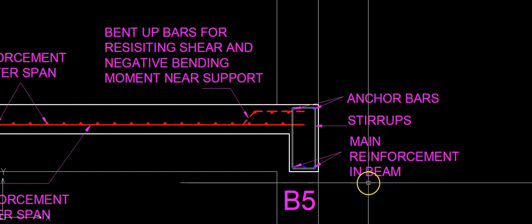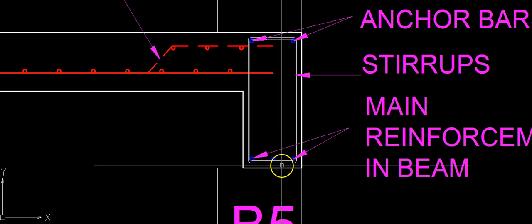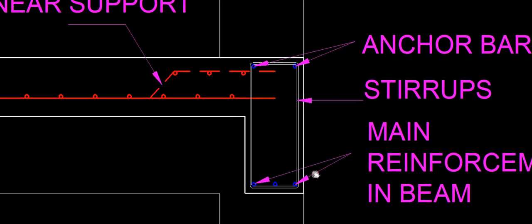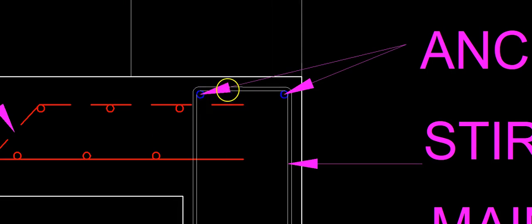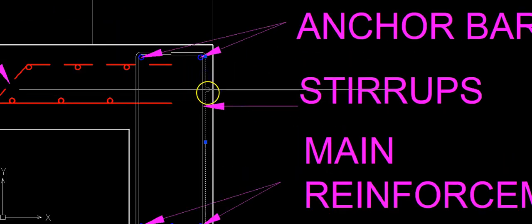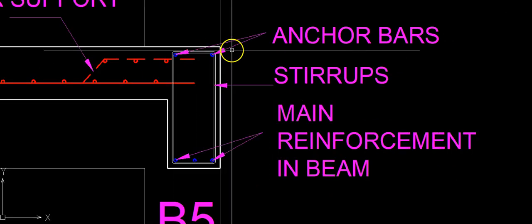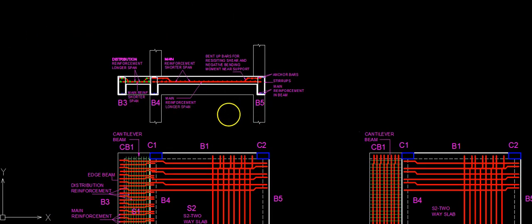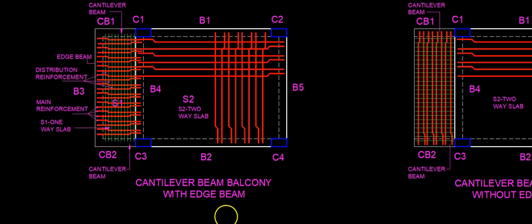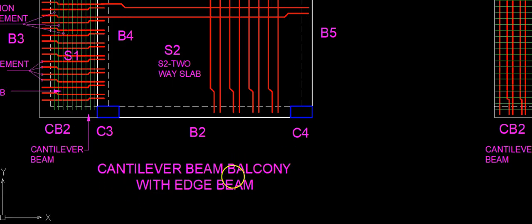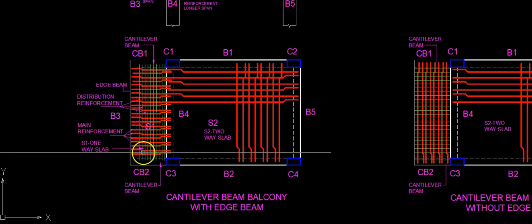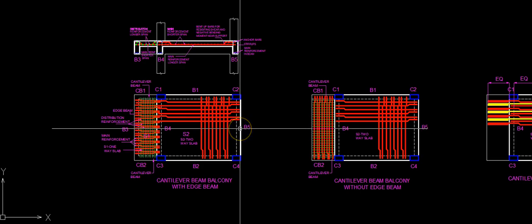You can also see the reinforcement in the beam. For a simply supported beam the main reinforcement is at the bottom — these three bars indicate the main reinforcement. At the top of the beam are two anchor bars used to tie the stirrups. In the center are the stirrups, which resist shear in the beam. This is the reinforcement detail for the first type of balcony — the cantilever beam balcony with edge beam. We will learn about the second type of balcony in the next video.